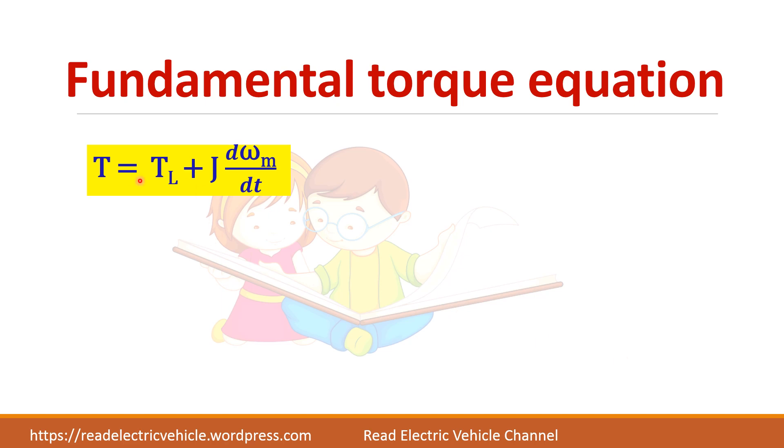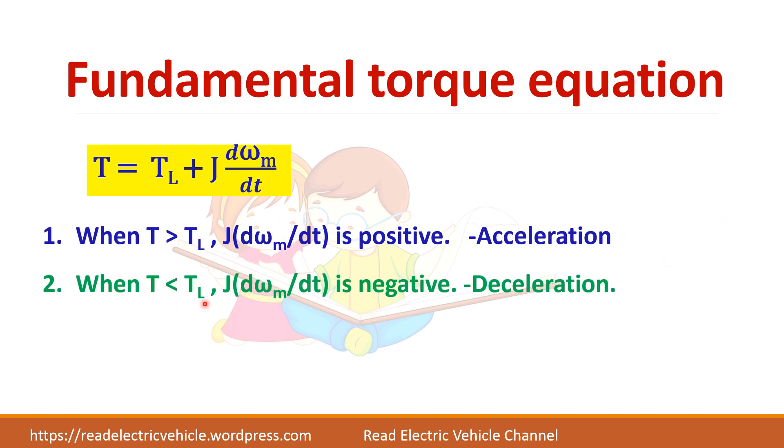So this is the fundamental torque. Now we have three conditions. When T is greater than TL, this component will be positive and it leads to acceleration. The speed keeps on increasing. And when T is less than TL, this component dωm/dt will become negative. It will change sign during deceleration. And when both are equal this dynamic torque will be equal to zero. That is the steady state condition.